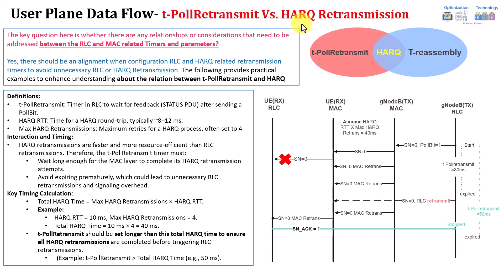Let me first tell you that vendors typically do this T-Poll Retransmit in a dynamic way, so they are increasing it dynamically. You have a start value, but usually it's dynamic. Anyway, let me explain what we have.